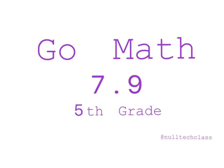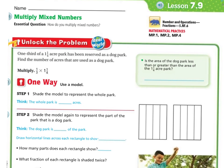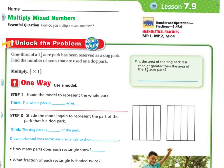Good morning. Today's lesson is 7.9. We are multiplying mixed numbers. Our essential question: how do you multiply mixed numbers?